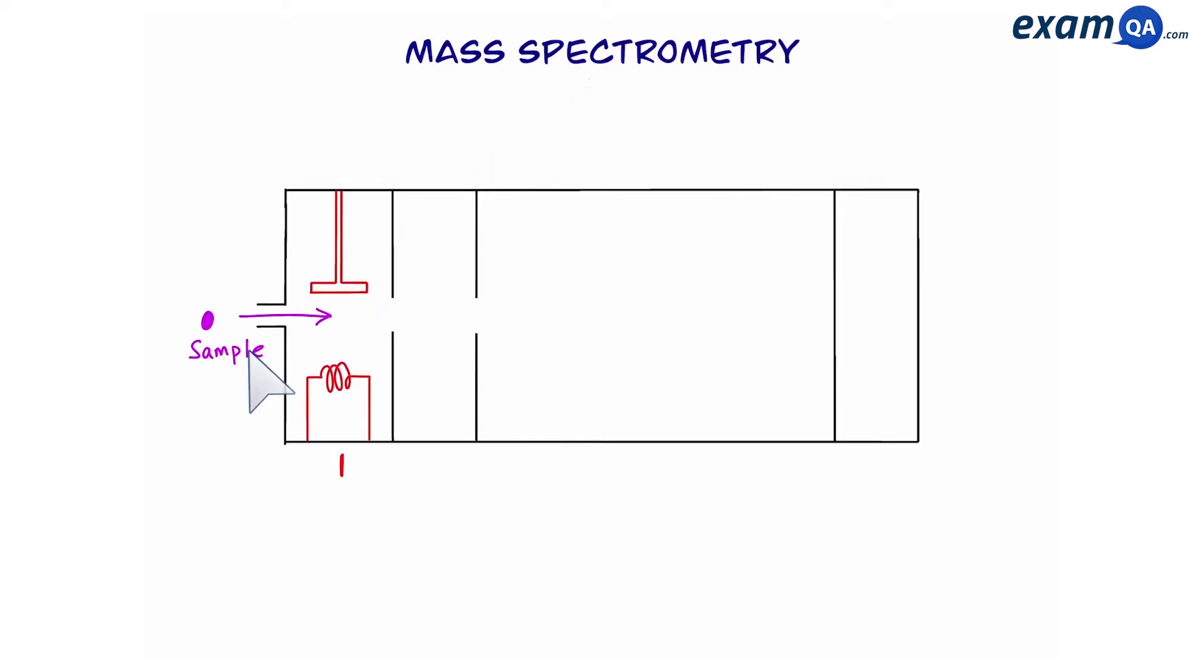First, we put the sample of magnesium into our mass spectrometer. Stage 1 turns the atoms into positively charged ions by knocking off electrons. This is done using an electron gun.